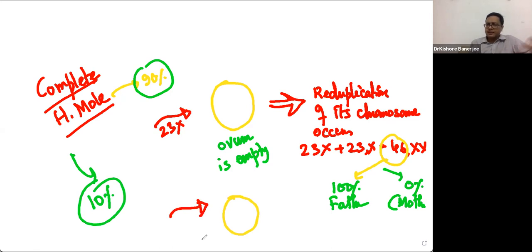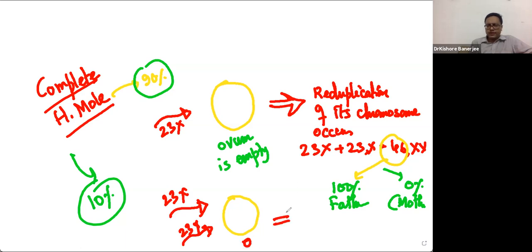That is also possible in the complete mole. Suppose one sperm is 23X, another is 23Y, and the mother's contribution is 0. So here, 23X plus 23Y plus 0 gives 46XY.